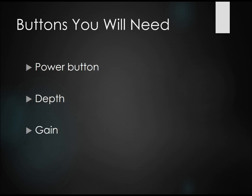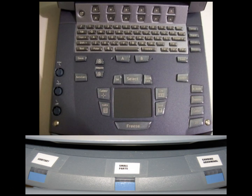What buttons will you need to know on the machine that you're using? You're going to need to know where the power button is, as well as the depth and the gain. This is a SonoSite M-Turbo. The power button is here. Here's the depth and the gain.